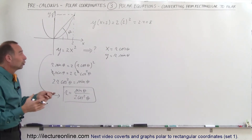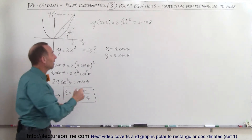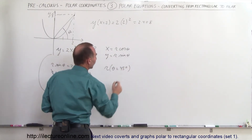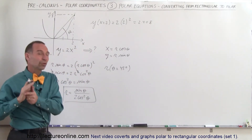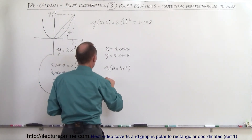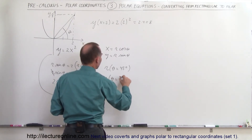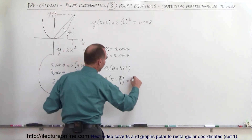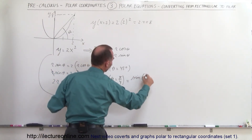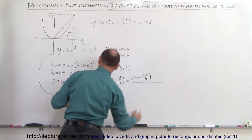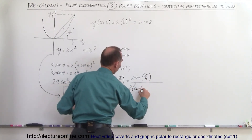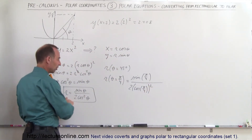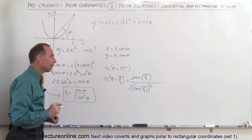Let's say I want to find r when theta is equal to 45 degrees. We don't typically write it in degrees — we write it in radians — so: what is r equal to when theta is equal to pi divided by 4? Let's go ahead and plug that in. We have the sine of pi divided by 4, divided by 2 times the cosine of pi divided by 4, quantity squared. We've solved for r, and in this case theta is the particular value of pi over 4.